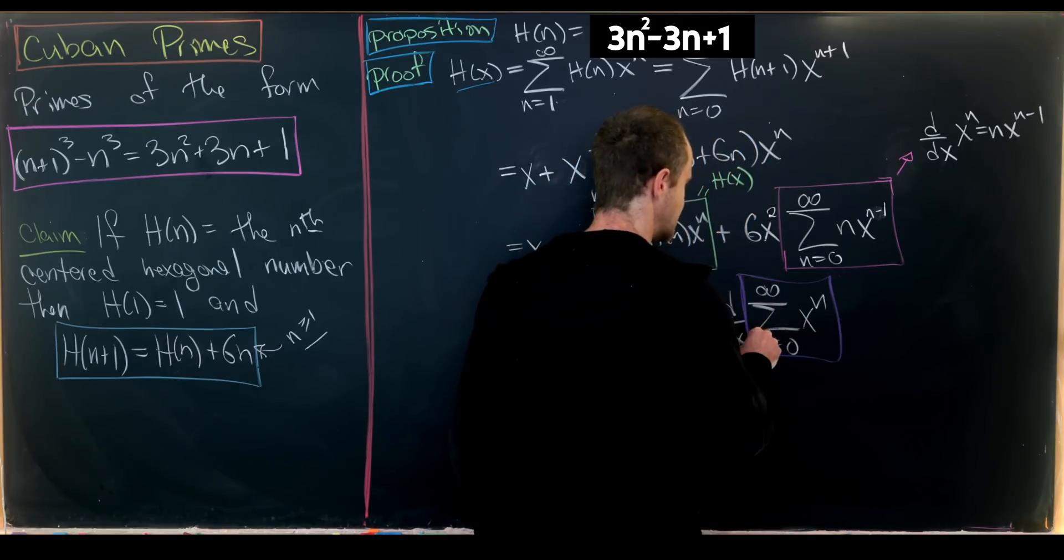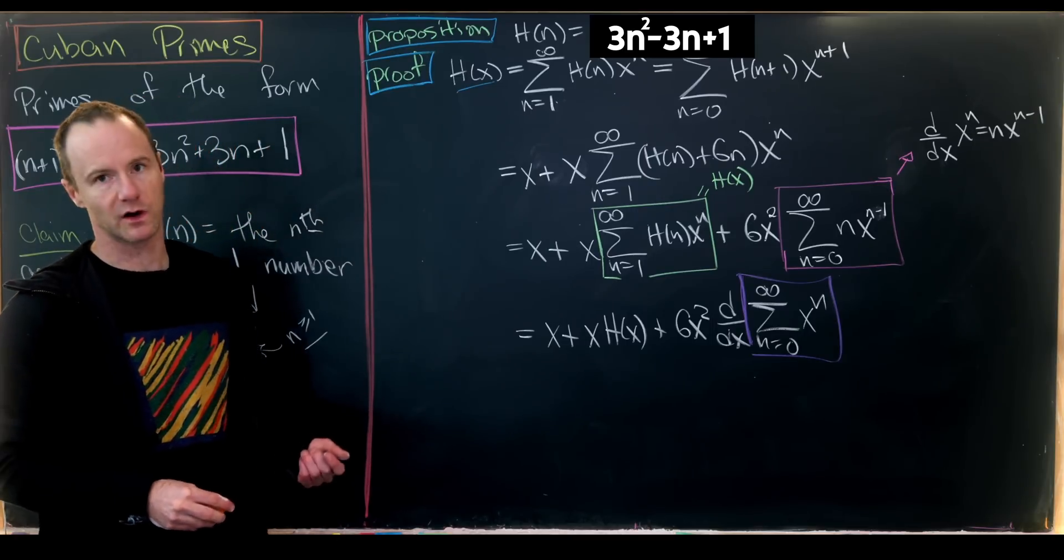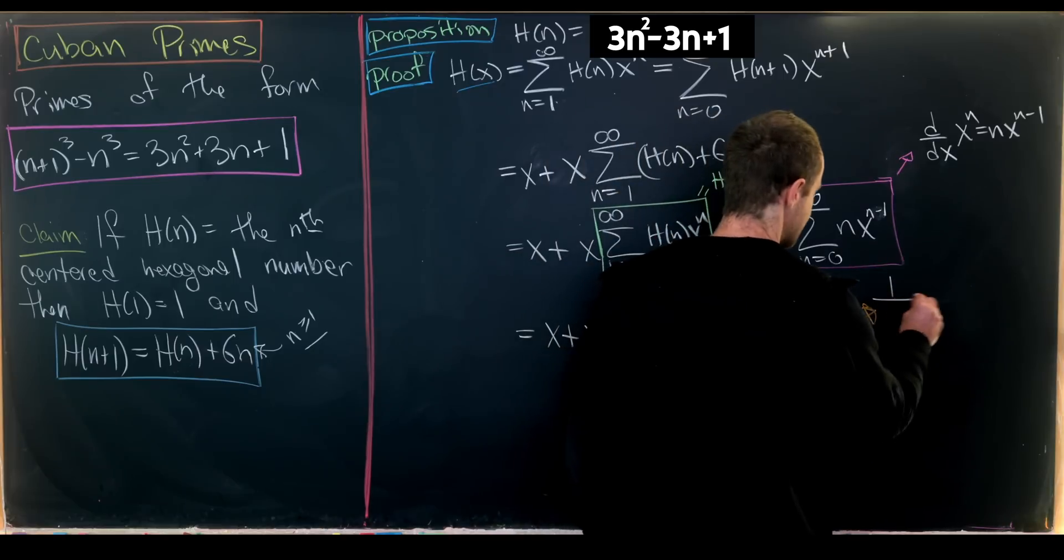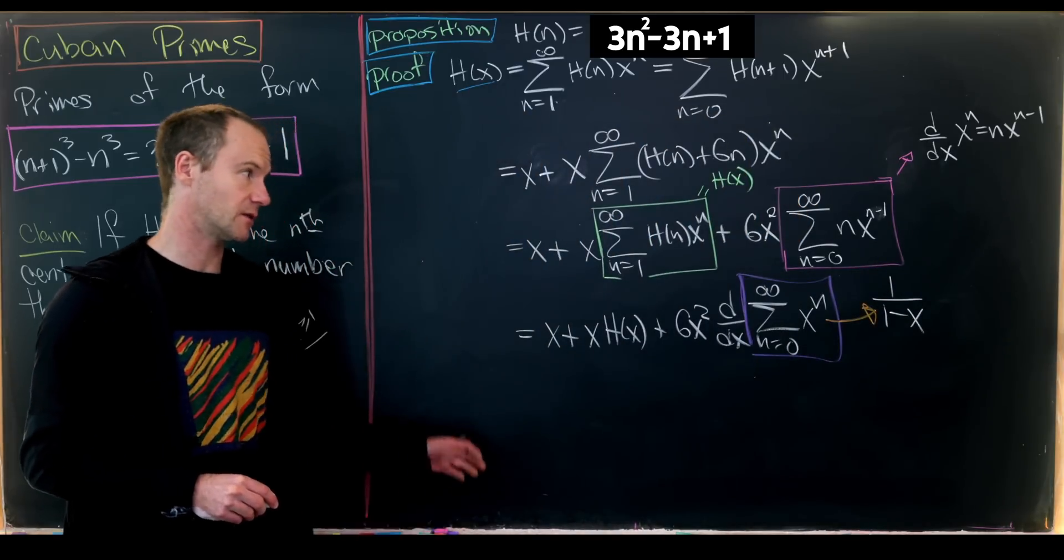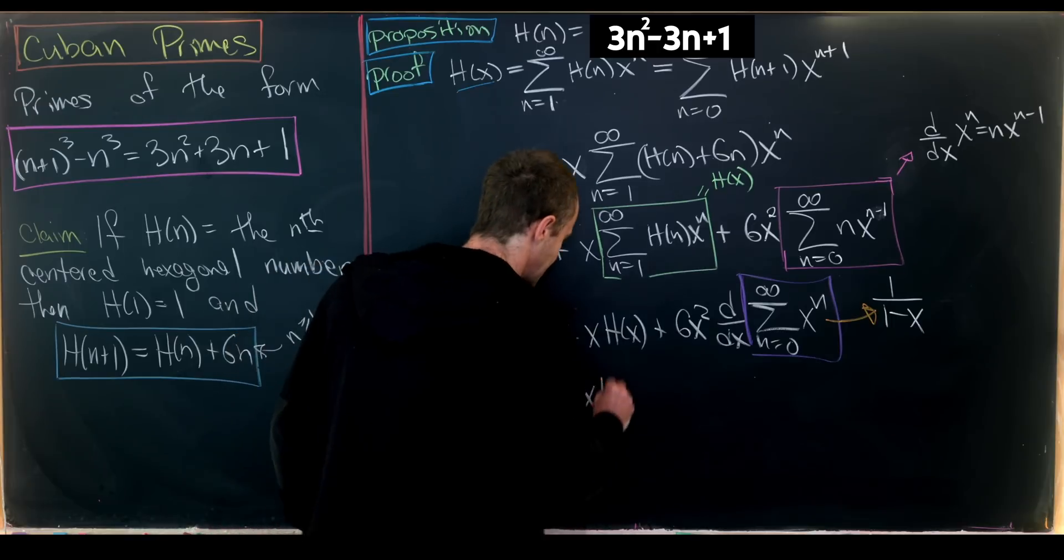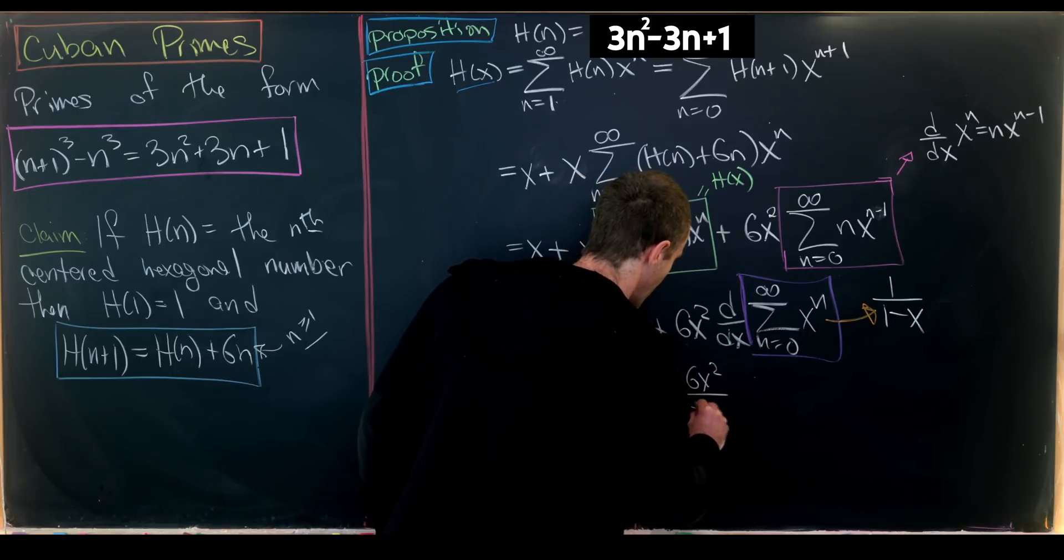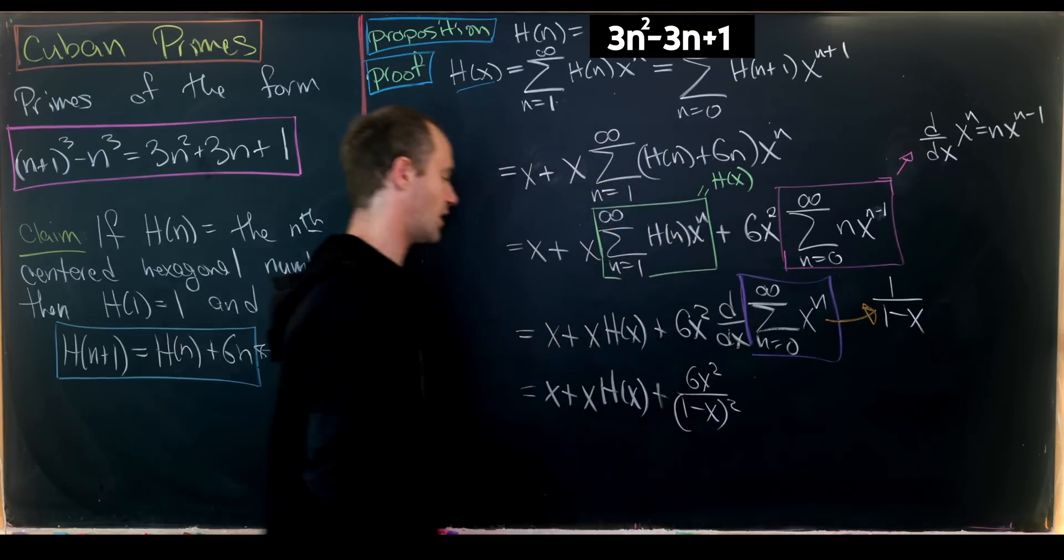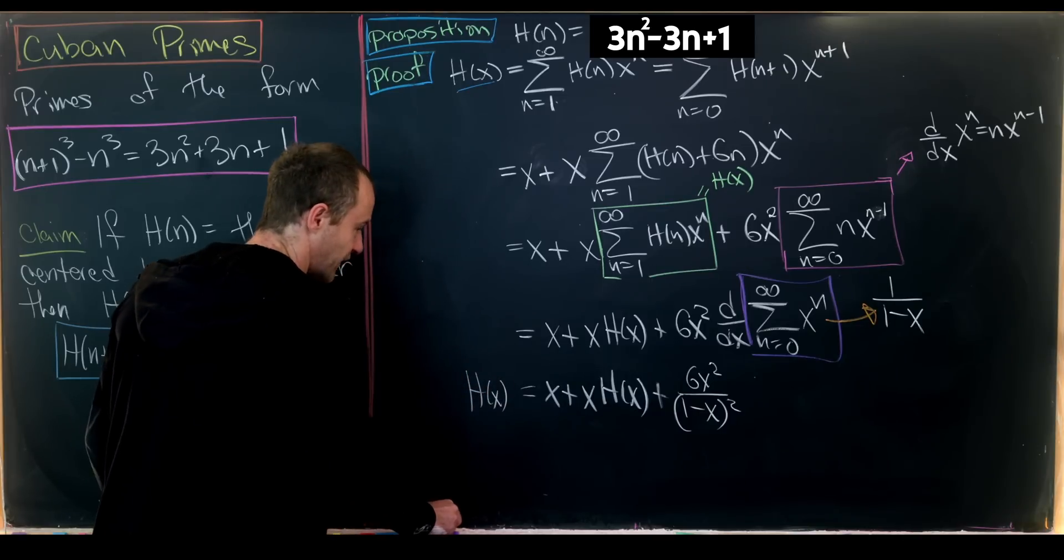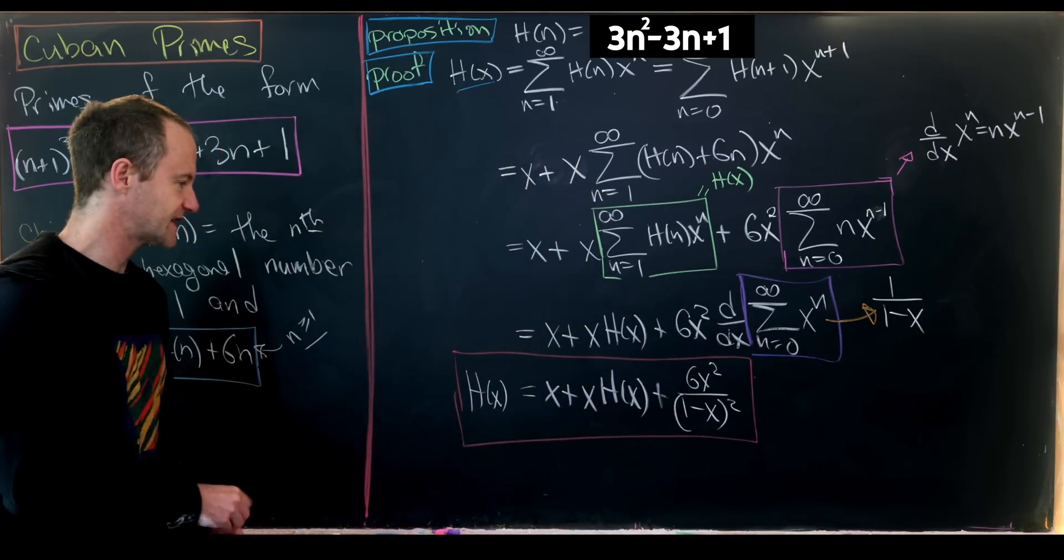We can move the derivative outside since these are combinatorial tools. This is a geometric series: 1/(1-x), with derivative 1/(1-x)². So we have H(x) = x + xH(x) + 6x²/(1-x)². Let's solve for H(x).